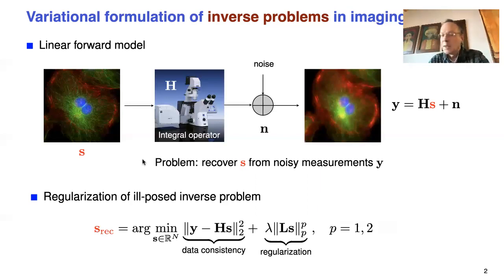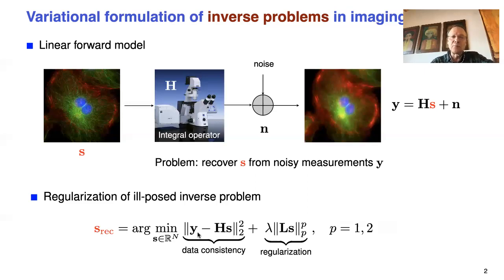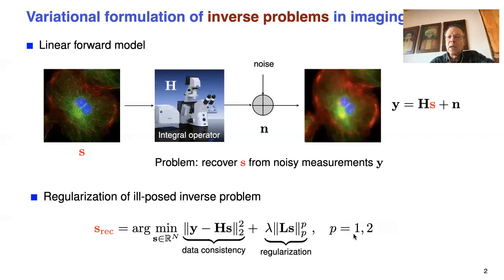The problem in computational imaging is to recover S — the original concentration of the fluorophore — given those noisy measurements. This is done in practice by posing it as a minimization problem with a cost functional consisting of two terms: a data term ensuring consistency with the measurement, and a regularization term. The preferred norms are the L2 norm for classical linear reconstruction and the L1 norm for compressed sensing.